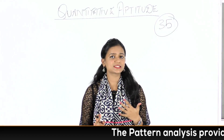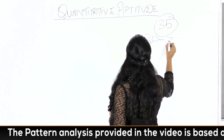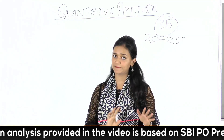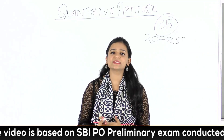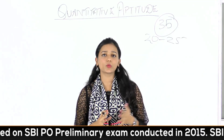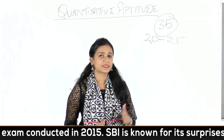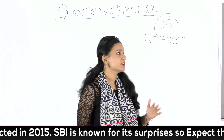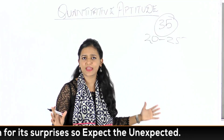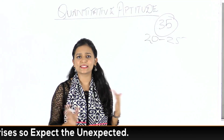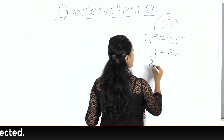I would suggest that you should at least give 20-25 minutes for Quant depending upon the difficulty level. Many students attempt English and Reasoning before Quant, so it is really important that they have sufficient time to attempt at least safe attempt questions. In Quant, you should attempt at least 18-22 questions as safe attempt.